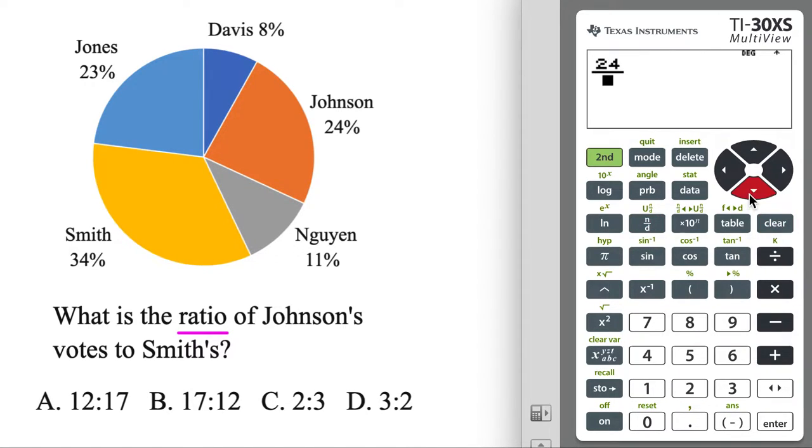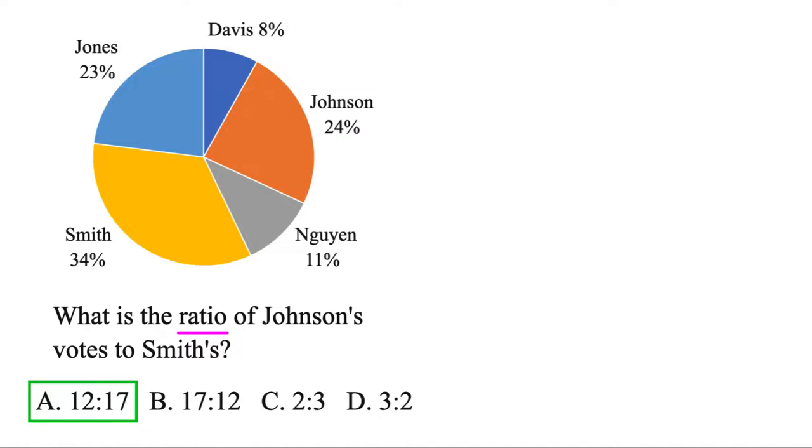Got 24 over 34, simplify it. So 12 over 17, same thing as A there. And that just tells us for every 12 votes that Johnson got, Smith got 17.